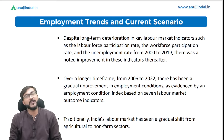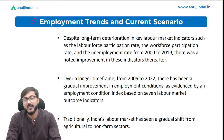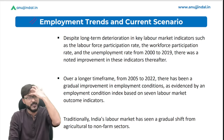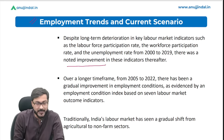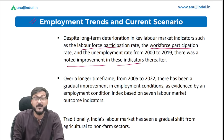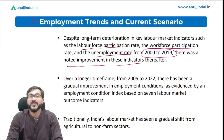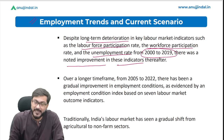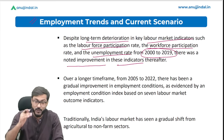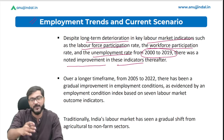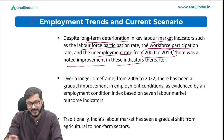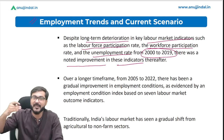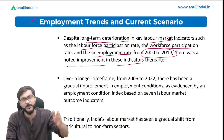The first part covers employment trends and current scenario. The report notes an improvement in labor force participation rate, workforce participation rate, and unemployment rate from 2000 to 2019, despite a long-term deterioration in key labor market indicators. The unemployment rate has been gradually improving compared to the period before 2000.